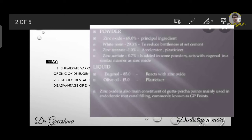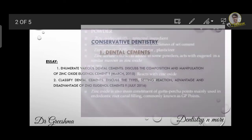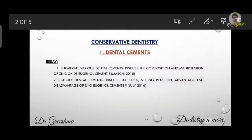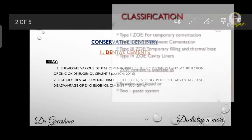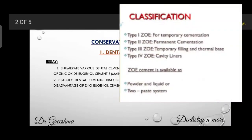The second question is: classify dental cements and discuss the types, setting reaction, advantage, and disadvantage of zinc oxide eugenol cement. We have already discussed the classification of dental cements. Coming to the types of zinc oxide eugenol cement, it is of 4 types: Type 1 is temporary cementation, Type 2 is permanent cementation, Type 3 is bases and temporary restorations, and Type 4 is cavity linage.